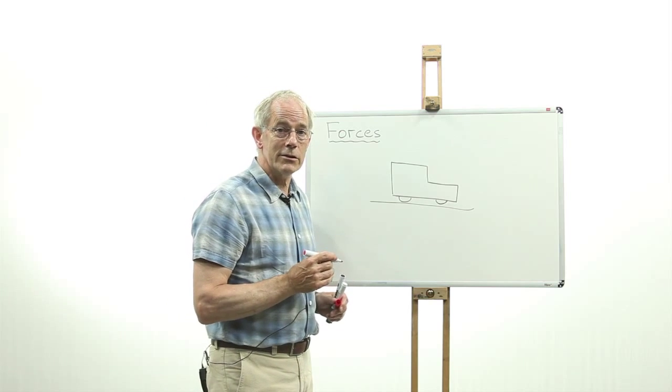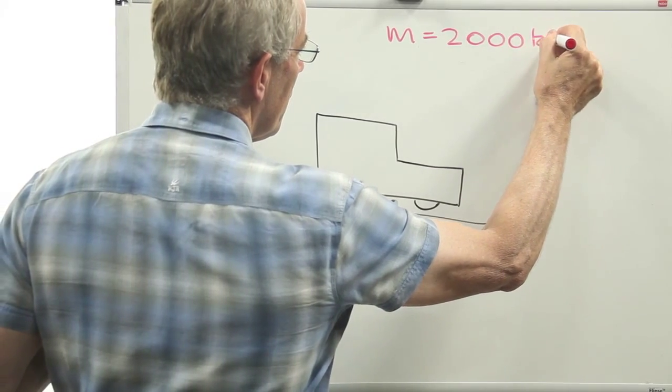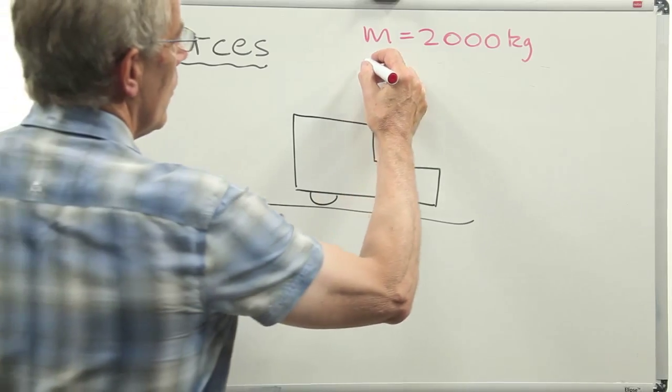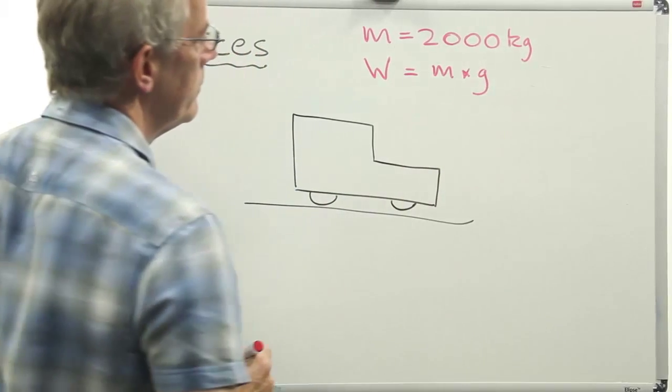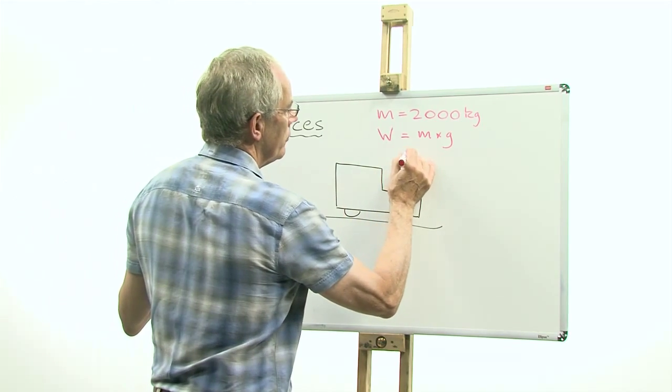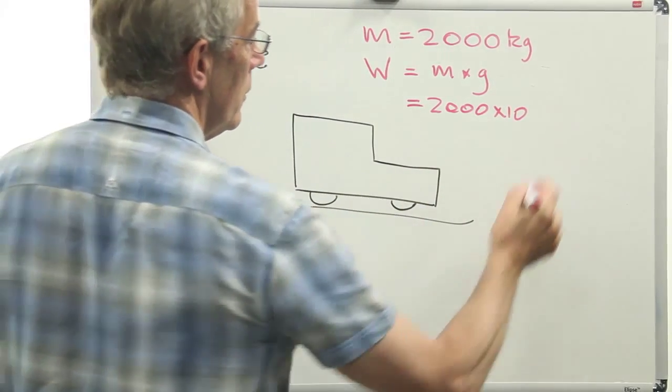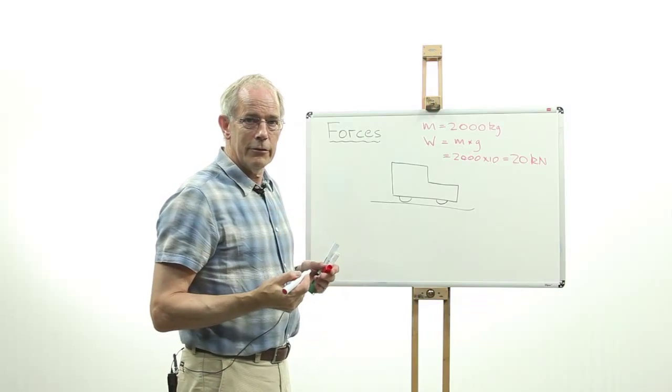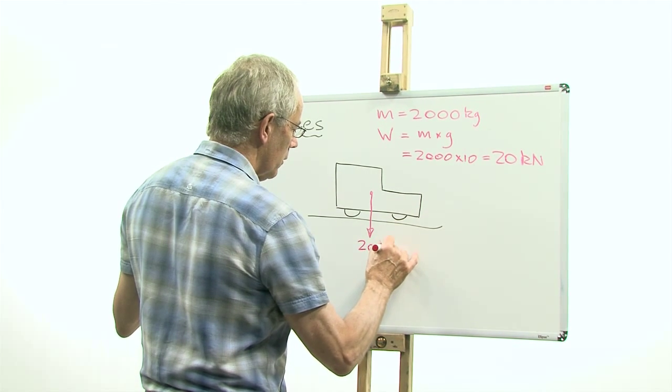Let's say the vehicle has a mass of 2000 kilograms. This mass in the Earth's gravitational field generates a weight and the size of the weight is the mass times gravity. Now at sea level, gravity is around 9.8 meters per second squared. So we can say that if we approximate that to 10, this gives us a weight of 2000 times 10 newtons, which we can also write as 20 kilonewtons. This force acts in the vertical direction downwards. So here we have the weight of the vehicle, 20 kilonewtons.